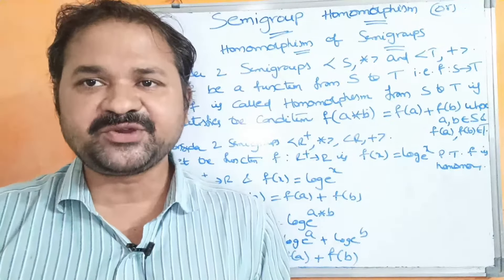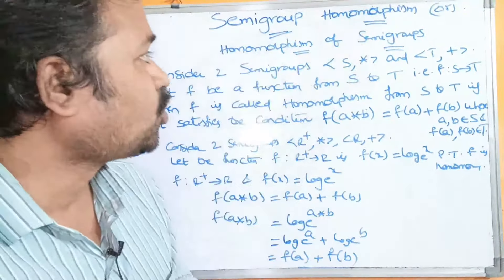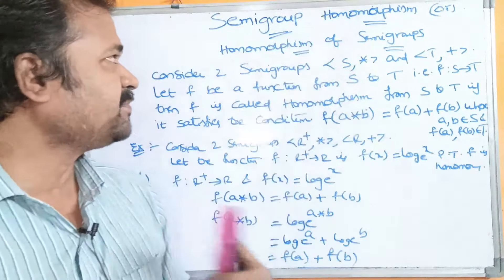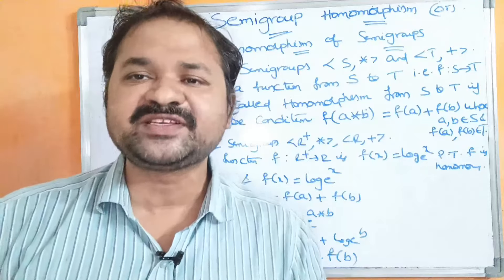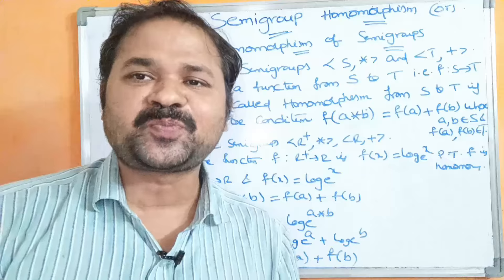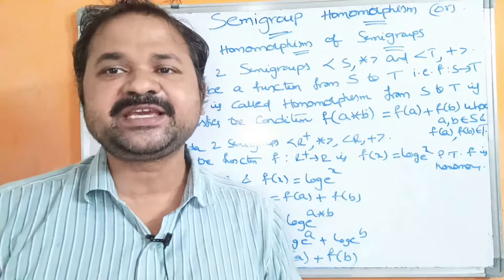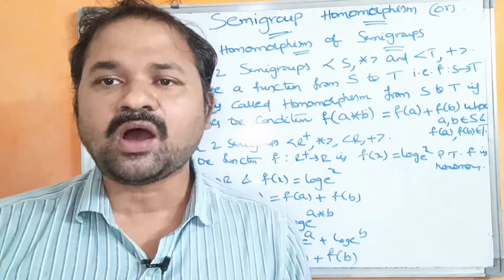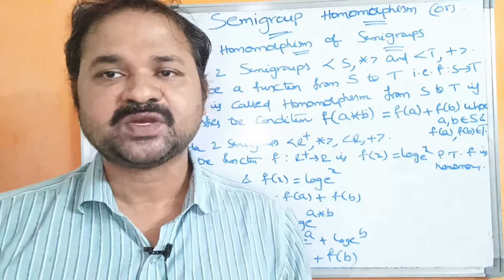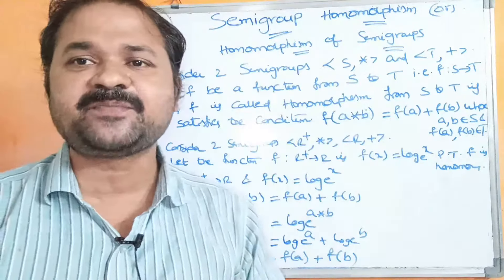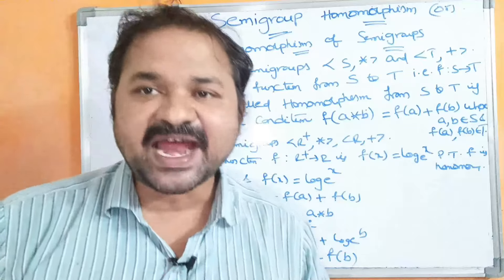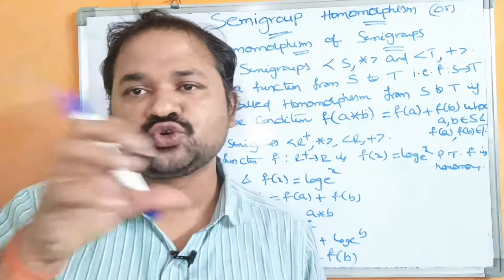In this video, we are going to discuss semigroup homomorphism, also called homomorphism of semigroups. The name itself specifies the meaning — it is a combination of semigroup and homomorphism. The algebraic systems must be semigroups, and we have to prove that homomorphism is satisfied between those two semigroups.